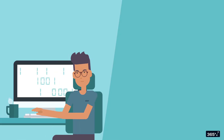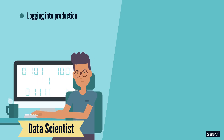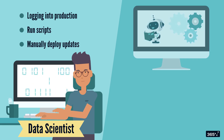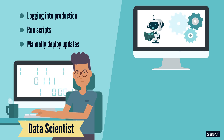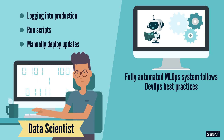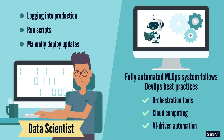Now think about how this compares to the old-school approach. Instead of a data scientist logging into production, running scripts, and manually deploying updates, a fully automated ML Ops system handles everything. It follows DevOps best practices using orchestration tools, cloud computing, and AI-driven automation to keep things running smoothly without constant supervision.